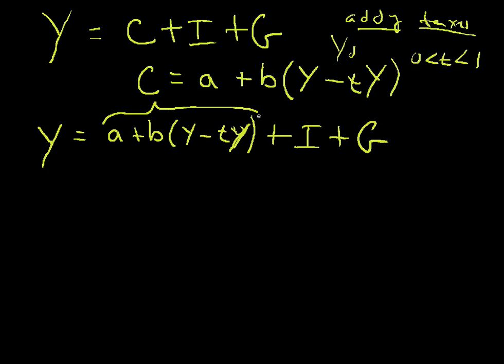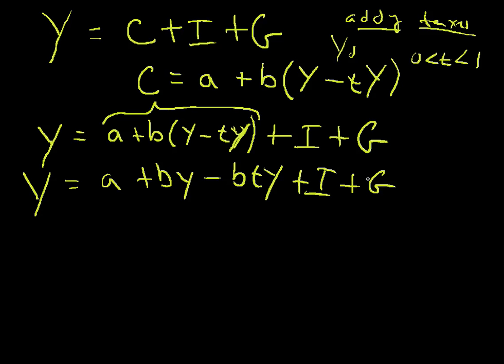That's the little ty plus i plus g. That's our new equation. This stuff here is all that C stuff with the new taxes in it, and the rest is the same. And the problem algebraically becomes the same kind of thing. You simply want to collect all your y terms.